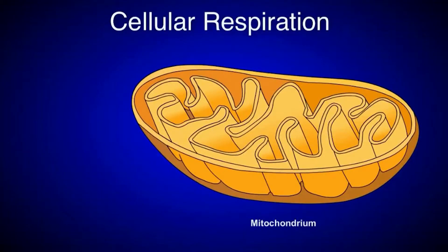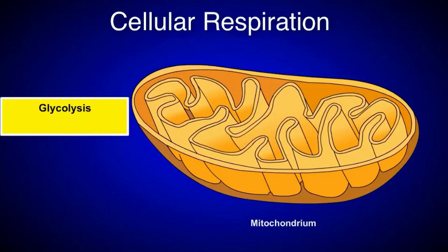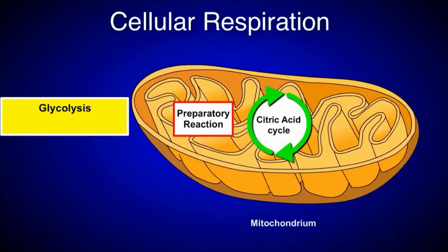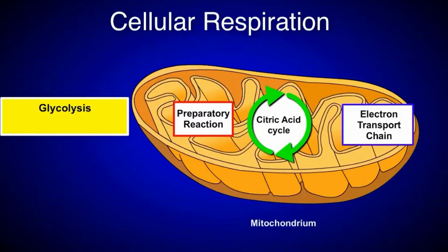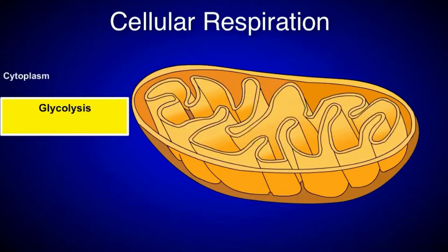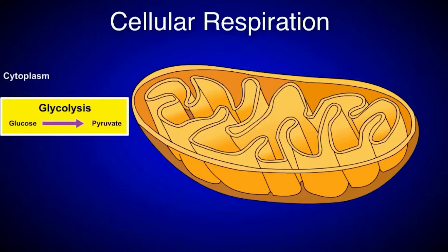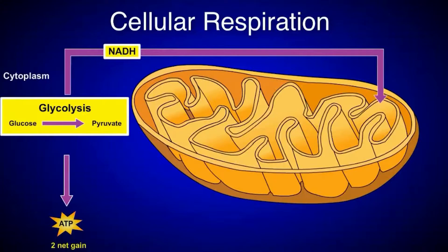Cellular respiration consists of four stages: glycolysis, preparatory reaction, citric acid cycle, and electron transport chain. The first stage, glycolysis, takes place in the cytoplasm outside the mitochondria. During glycolysis, enzymes break down glucose into two molecules of pyruvate. During this process, two ATP are produced and NADH is released to be used in later steps of cellular respiration.